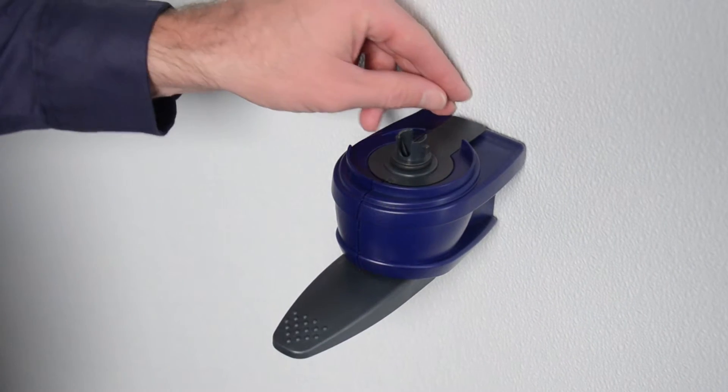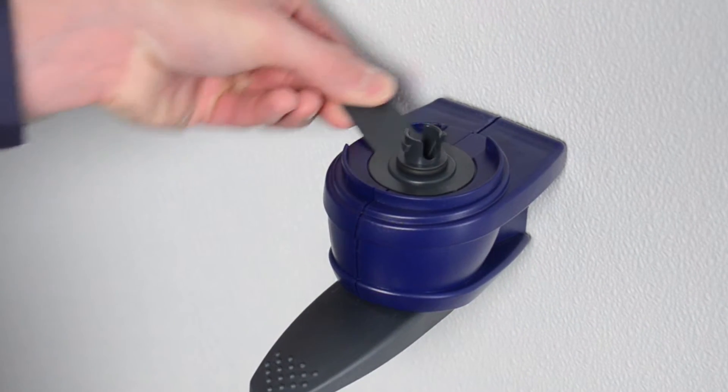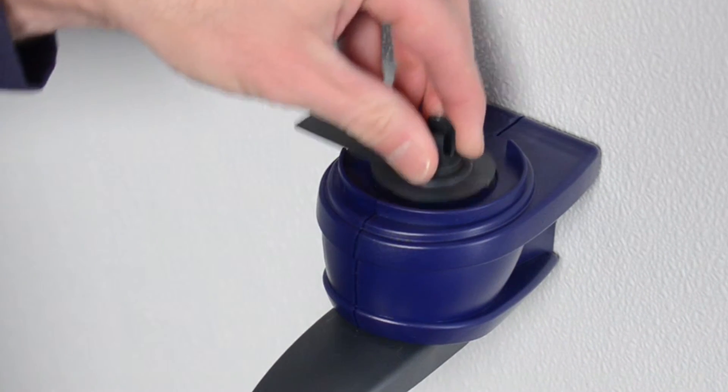If the pump needs to be removed for periodic cleaning, lift the tab and twist it to the left 90 degrees and then lift the pump out.